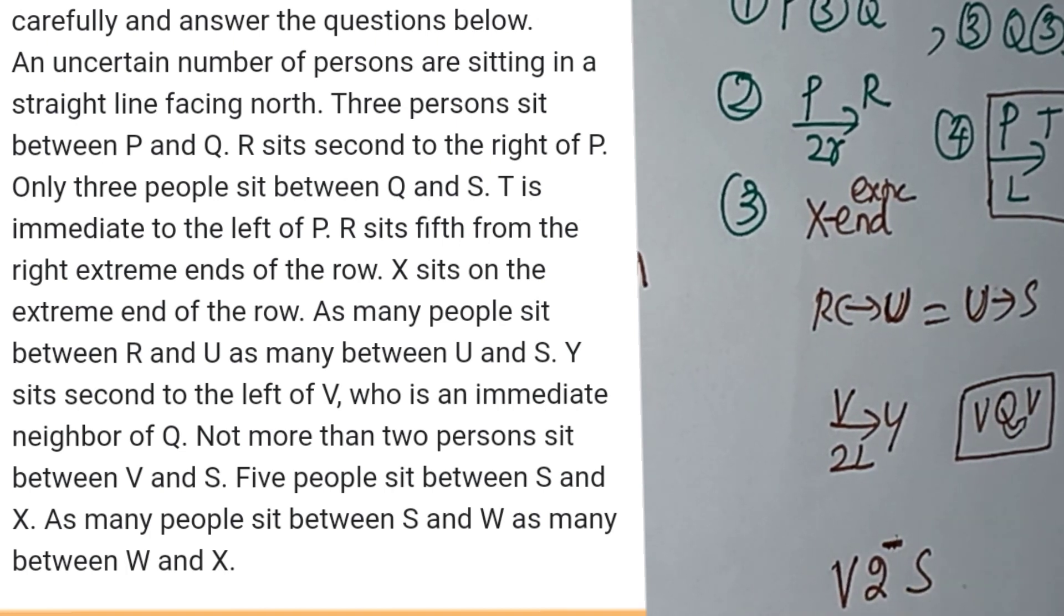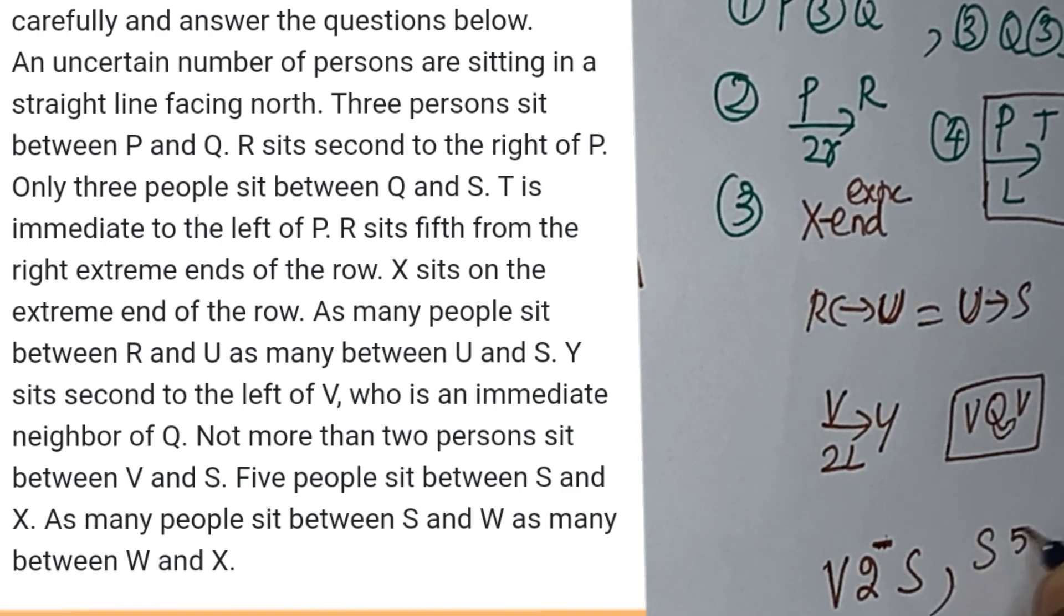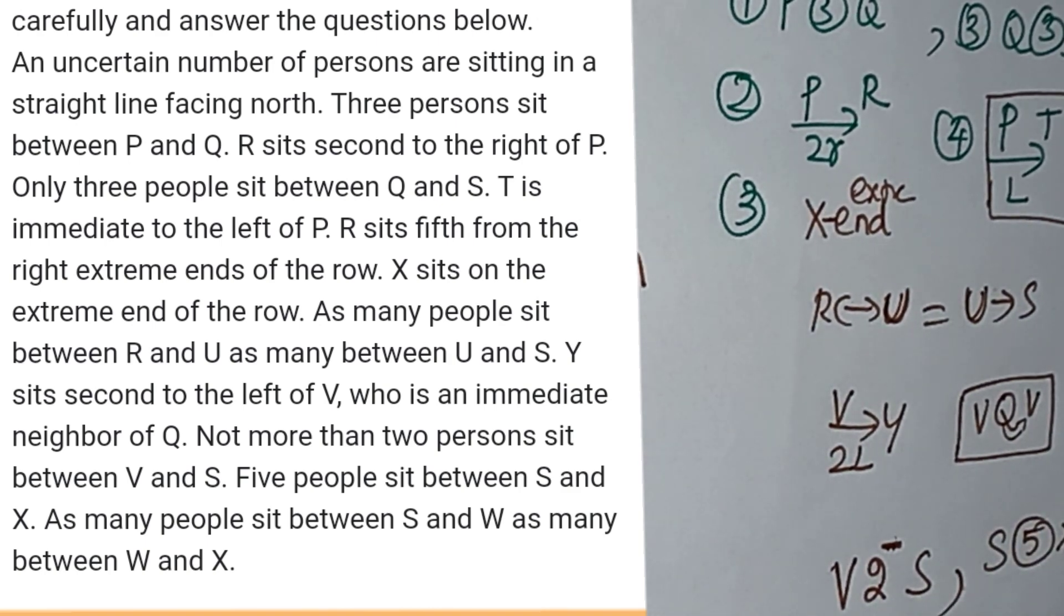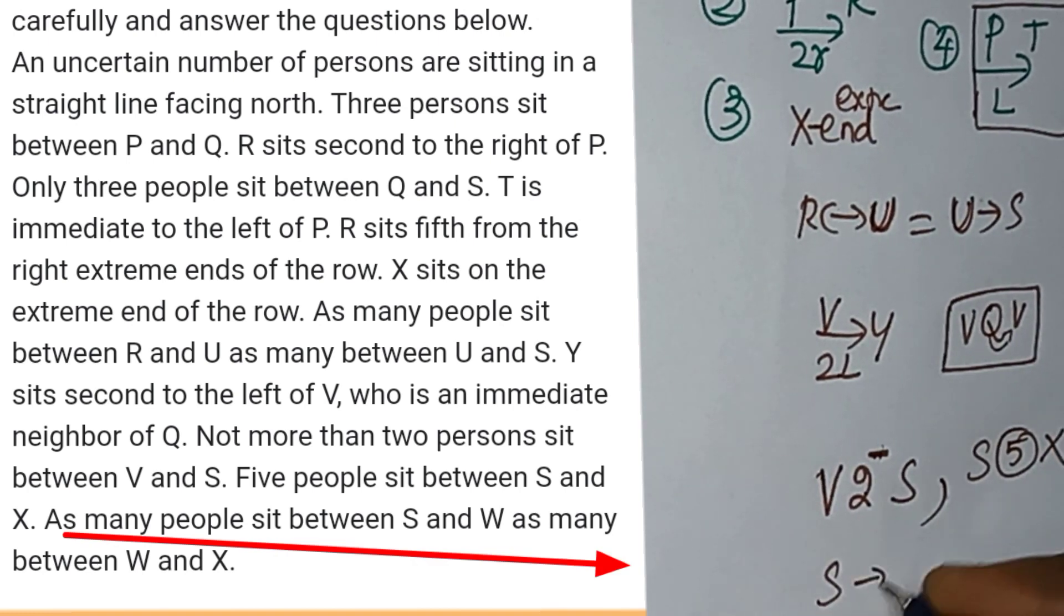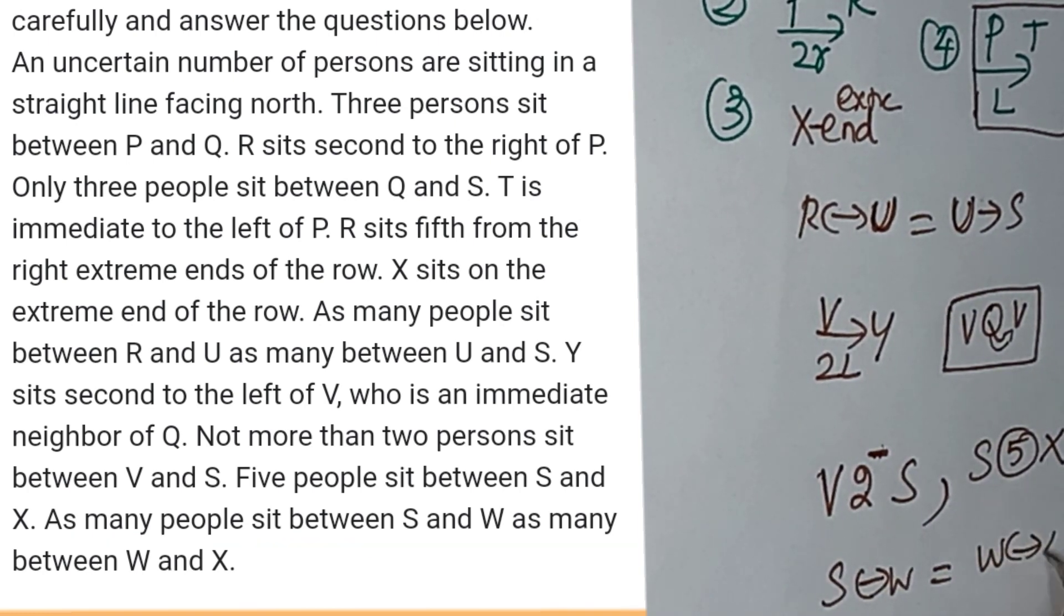The meaning is five people sit between S and X. As many persons sit between S and W as many persons between W and X. S and W are the same way, and W and X are the same way. Now let's look at clues.